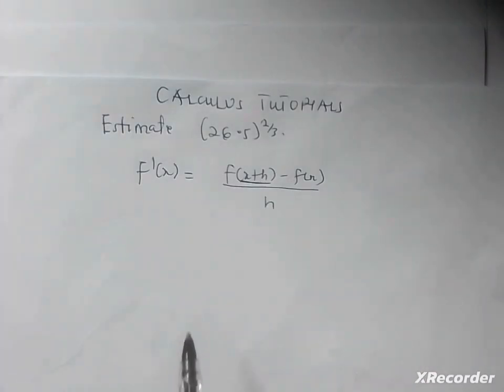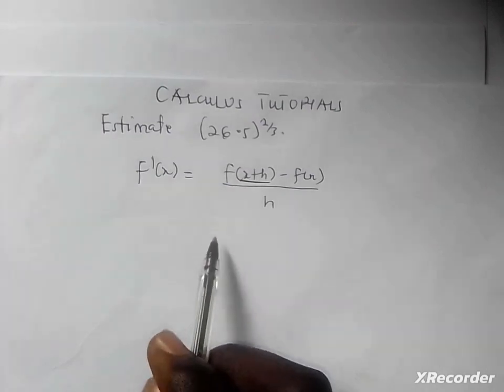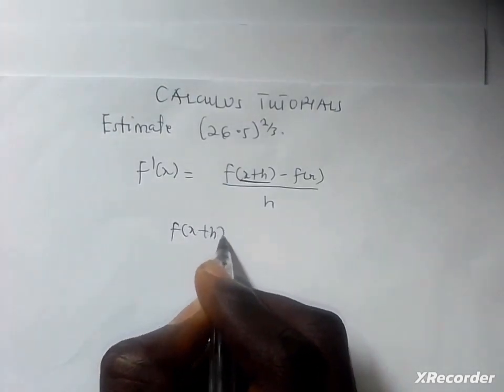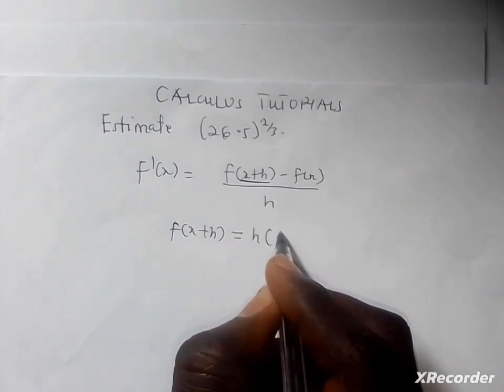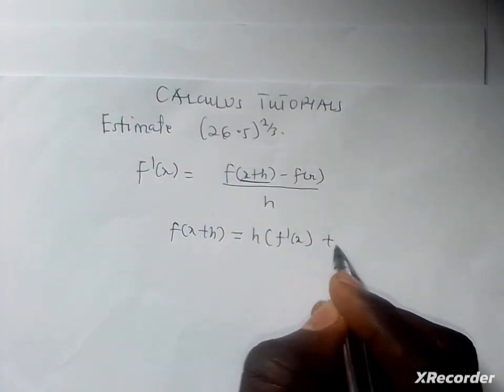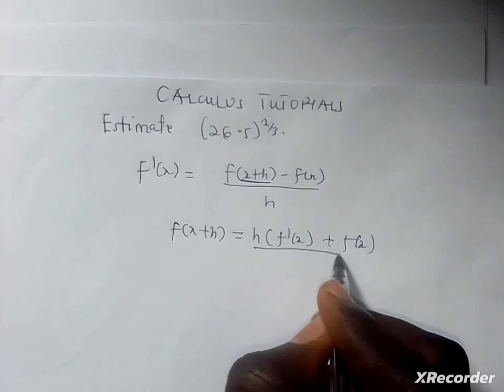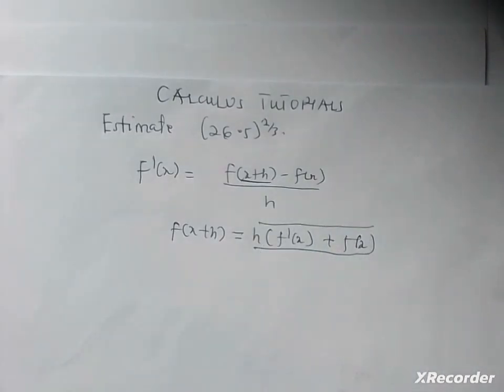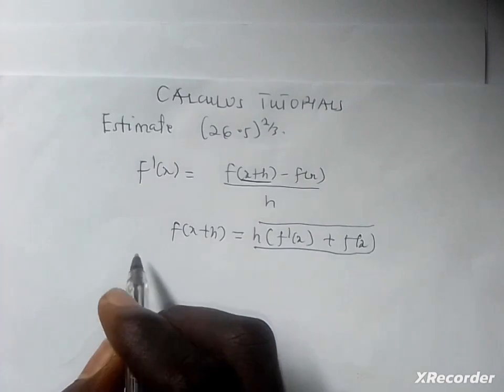I'm going to have f(x+h) equal to h·f'(x) plus f(x). So there's a formula for small changes: you first multiply your change by your derivative of the function when we put x in it, then plus f(x) itself. Let's identify our f(x+h) here.